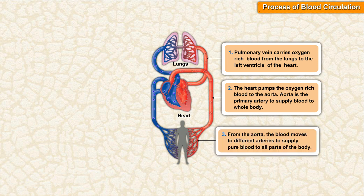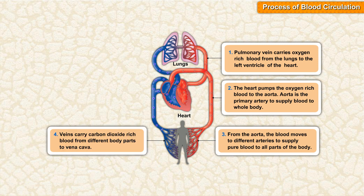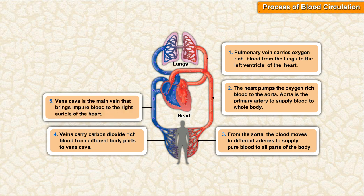From the aorta, the blood moves to different arteries to supply pure blood to all parts of the body. Veins carry carbon dioxide-rich blood from different body parts to the vena cava. The vena cava is the main vein that brings impure blood to the right atrium of the heart.